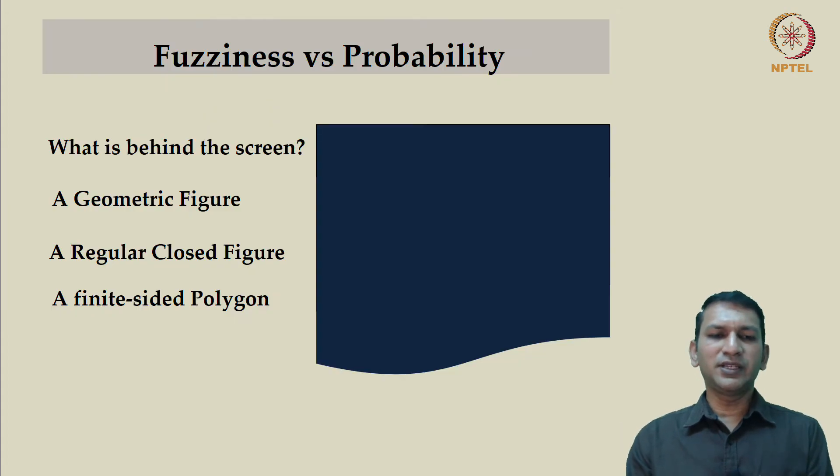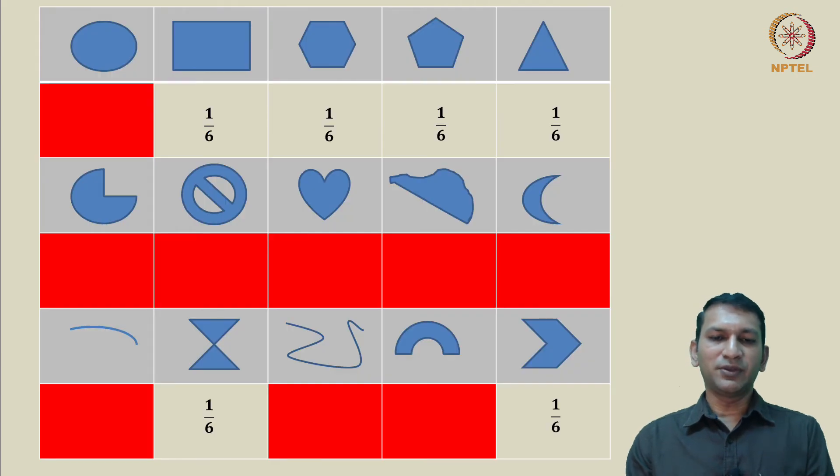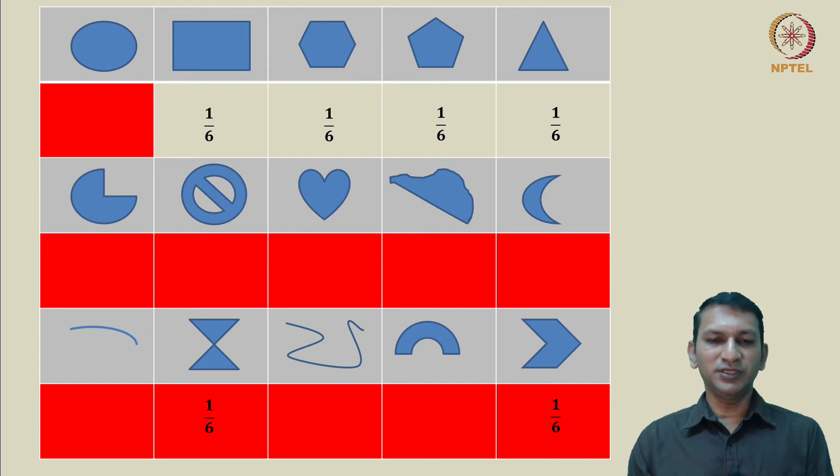Now, let us see whether we can get some more information. We are given this piece of information that it is actually a convex polygon. With this information, we are able to immediately exclude these two options. So, further reduction by 2 from a current sample space of 6. Once again re-evaluating the probabilities, we see that it is one-fourth on each of the four figures that remain.